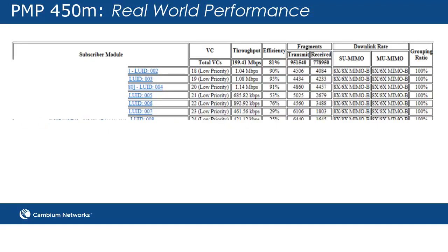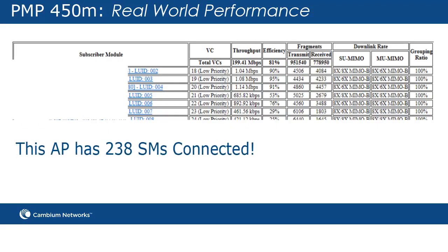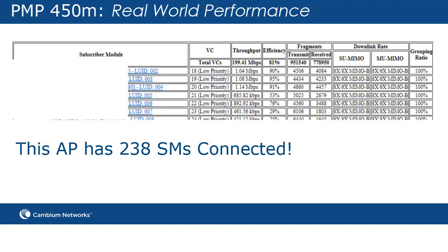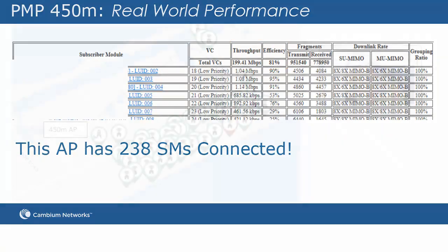This access point has 238 subscriber modules connected, showing 199 Mbps with 81% efficiency.